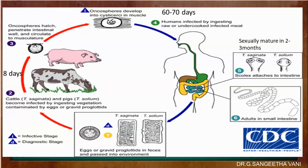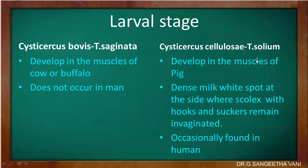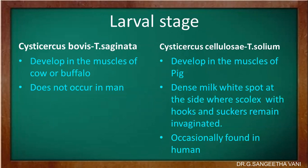You can see the adult worm in the small intestine and the scolex as already discussed. The larval stage Cysticercus bovis of T. saginata develops in the muscles of cow or buffalo, and this larval stage does not occur in human beings. Whereas Cysticercus cellulosae, the larval stage of T. solium, develops in the muscles as a dense milk-white spot at the site where the scolex and suckers are invaginated, and this stage can occasionally be seen in human beings.